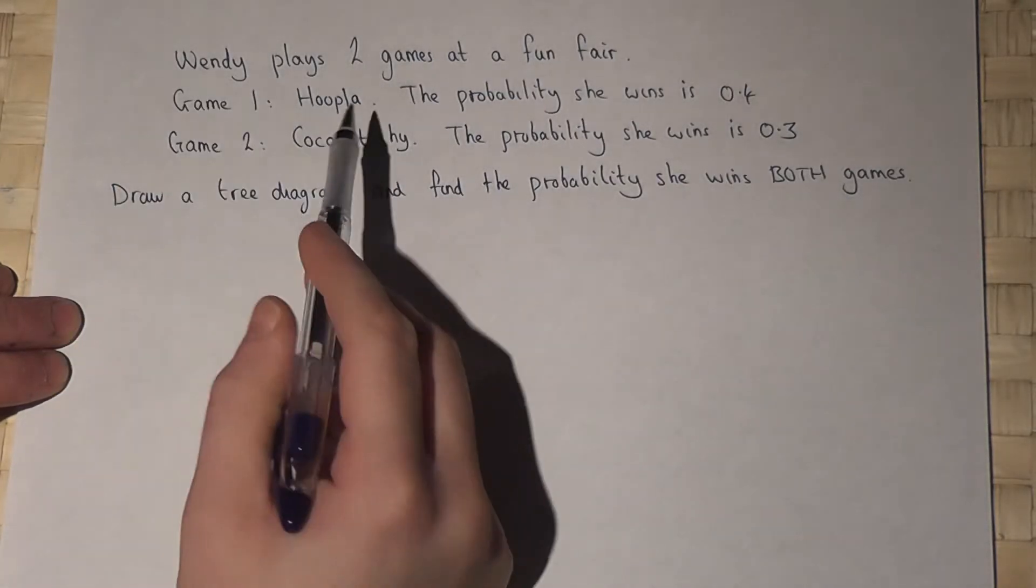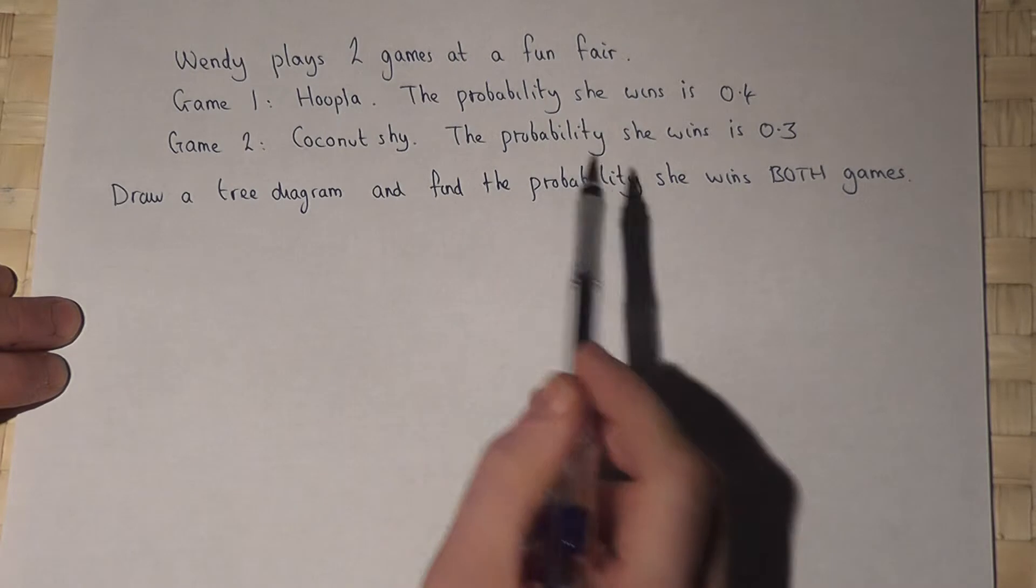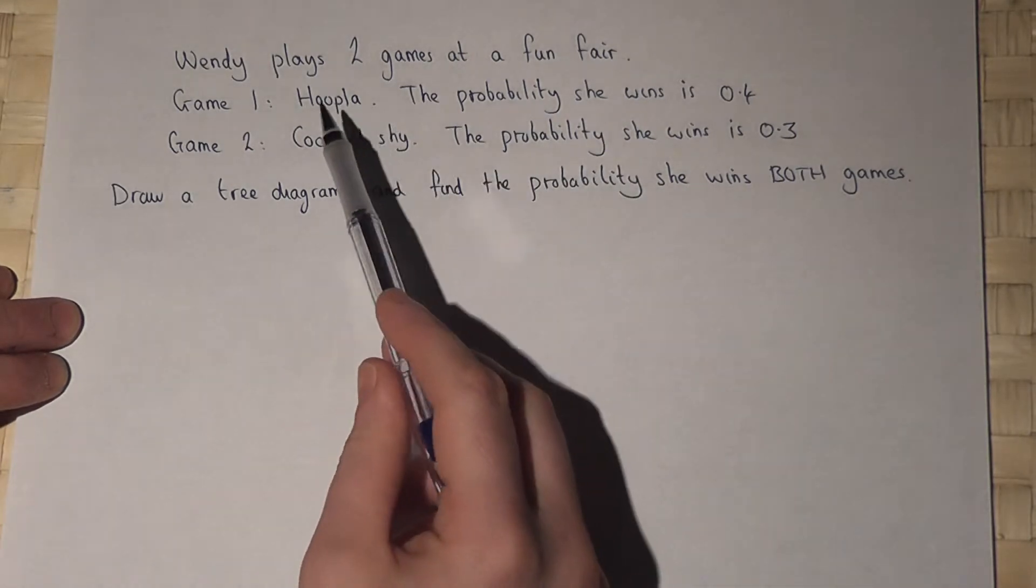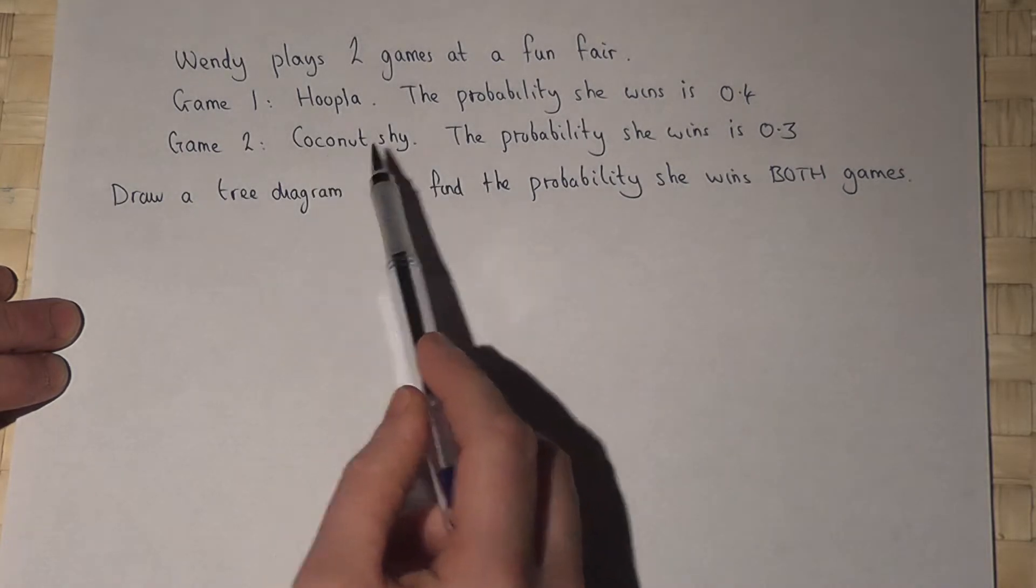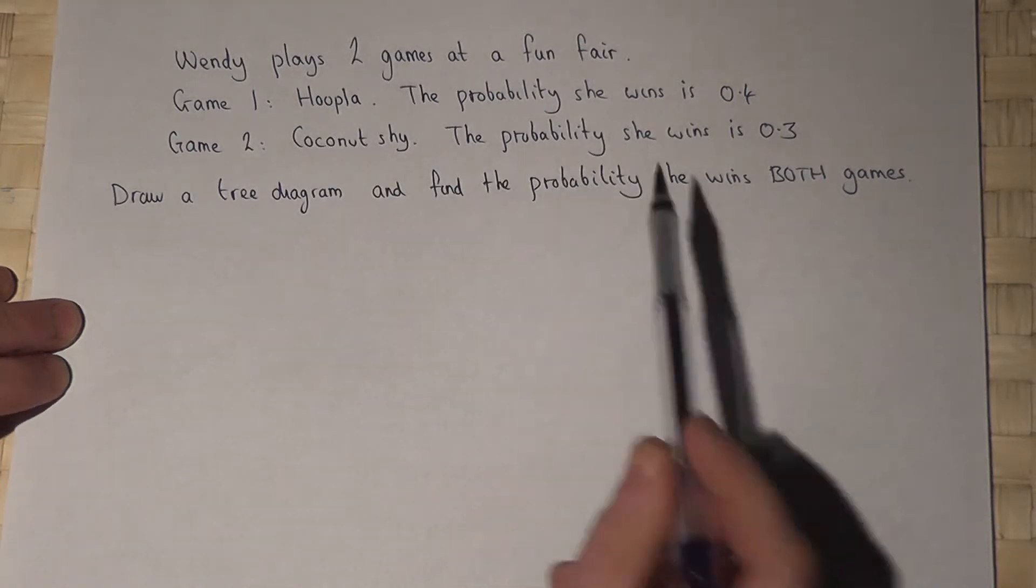In this problem, Wendy plays two games at a funfair. Hoopla, in which the chance she wins is 0.4, and a coconut shy, in which the chance she wins is 0.3.